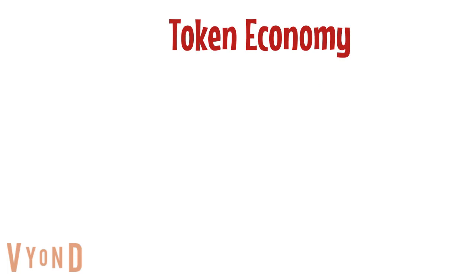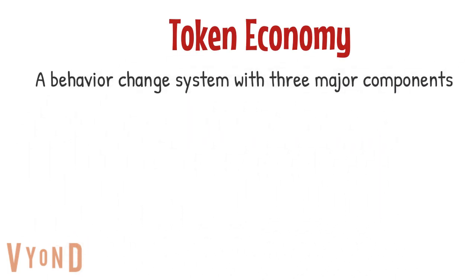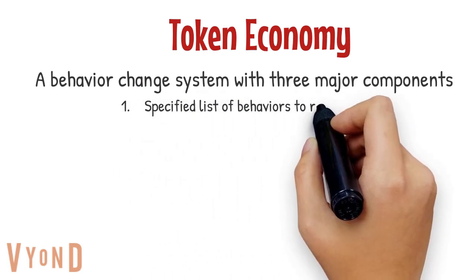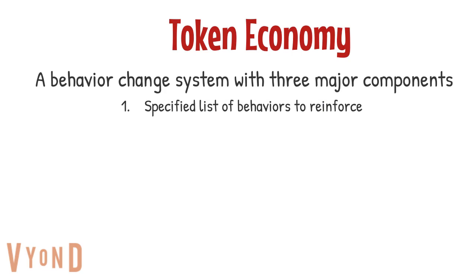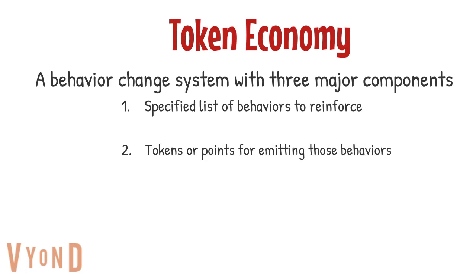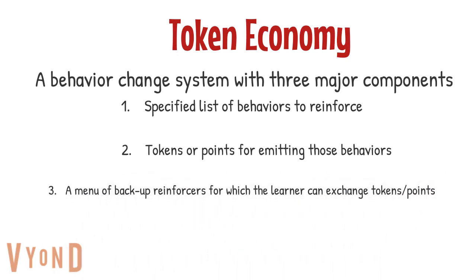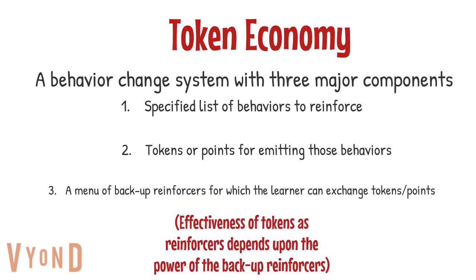Now let's talk about token economies. A token economy is a behavior change system with three major components: first, a specified list of behaviors to reinforce; second, tokens or points for emitting those behaviors; and third, a menu of backup reinforcers that the learner can exchange the tokens or points for. It's important to remember that the effectiveness of tokens as reinforcers depends on how powerful the backup reinforcers are.